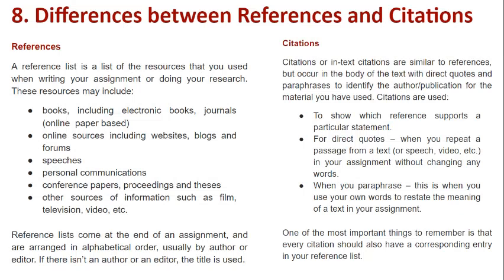A reference list is a list of resources that you used when writing your assignment or doing your research. Reference list comes at the end of an assignment and is arranged in alphabetical order, usually by author or editor. If there isn't an author or editor, the title is used. Citations are basically in-text references written in brackets when you use somebody's words or thoughts, while a reference list is given after the completion of your work. One of the most important things to remember is that every citation should also have a corresponding entry in your reference list.